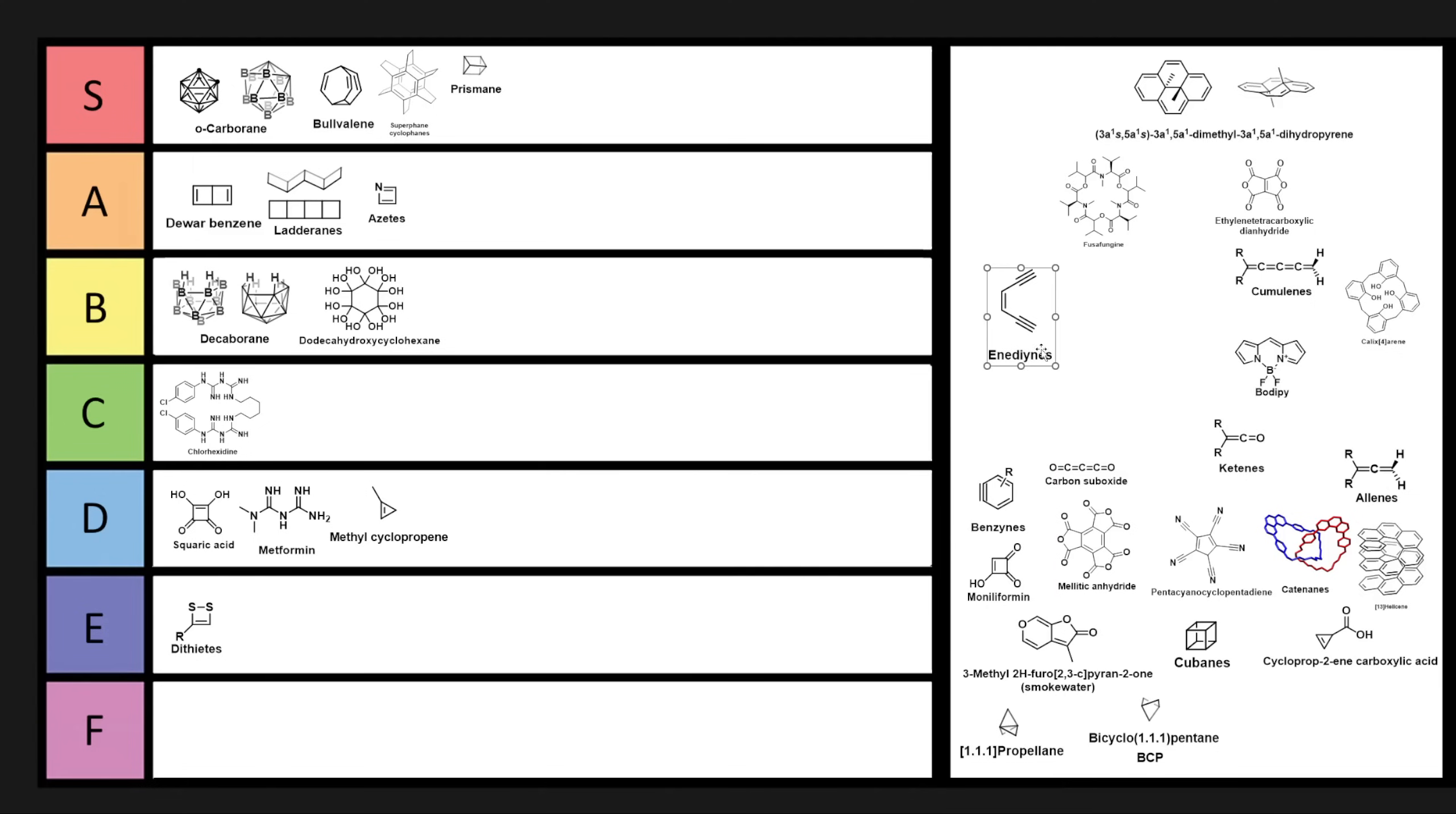Now, enediones. Enediones are present in some natural products. It can be used as a warhead because this can do a cycloaddition to generate a new ring as well as a diradical species. Definitely quite an interesting class of molecules, although their synthesis is relatively straightforward through a cross-coupling reaction. So not too, too cursed. Definitely interesting. But because it starts with an E, I think we're going to have to put it in E-tier.